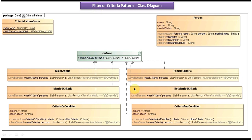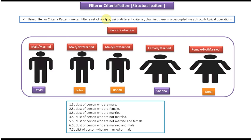This is a class diagram of the sample code which I am going to show for Filter Criteria Design Pattern. First I will explain the scenario where we have to use it. Suppose we have a person collection. Some of the persons are married and some are not married, some are male and some are female. From this collection we want to get sub-lists of persons who are male, married, and not married.